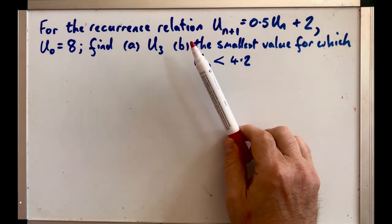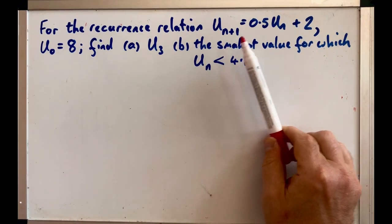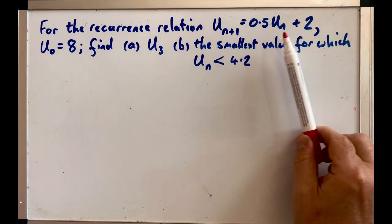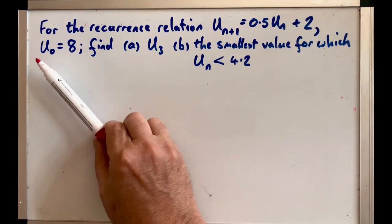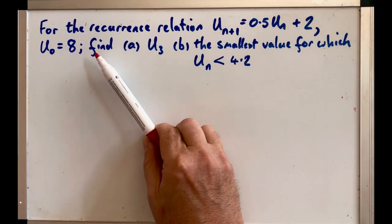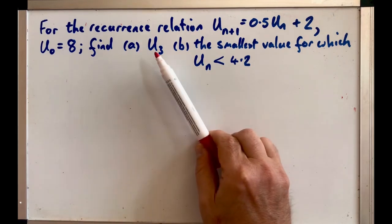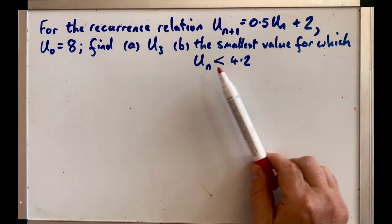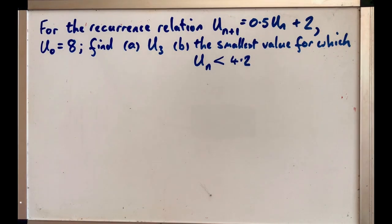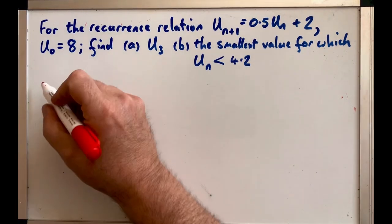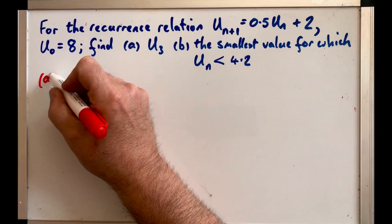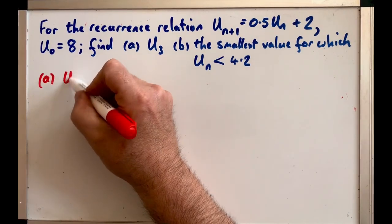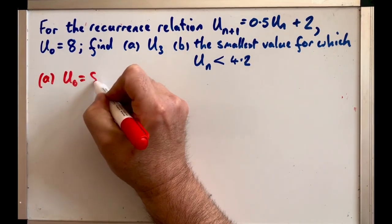For the recurrence relation, Uₙ₊₁ equals 0.5Uₙ plus 2 where U₀ is 8, find (a) U₃ and (b) the smallest value for which Uₙ is less than 4.2. Well, if we start off, if we're looking at A, remember U₀ is 8.